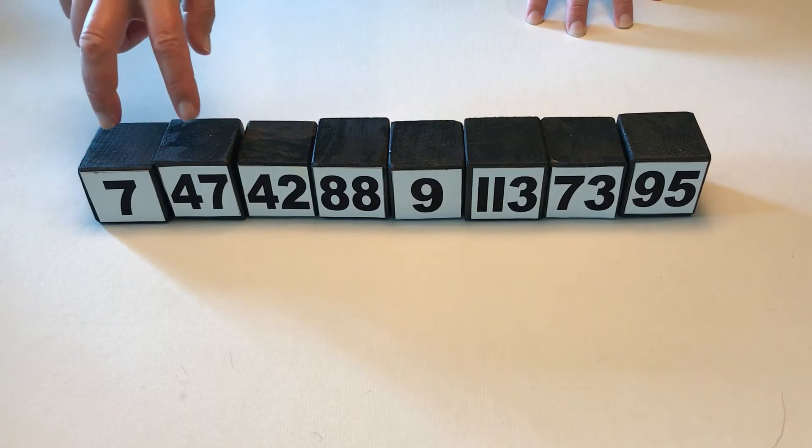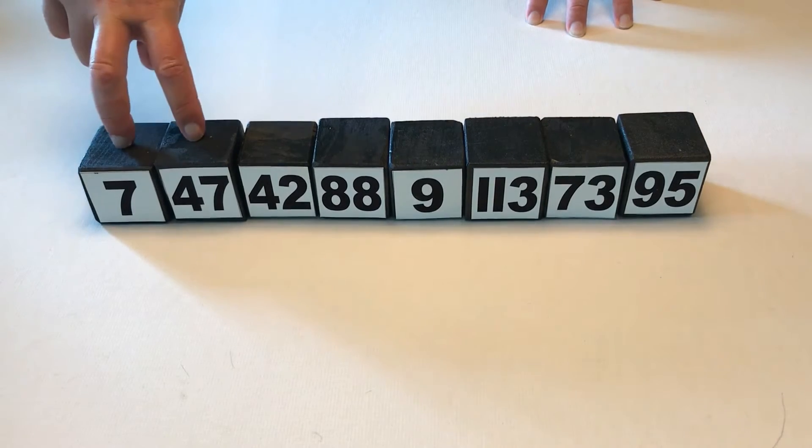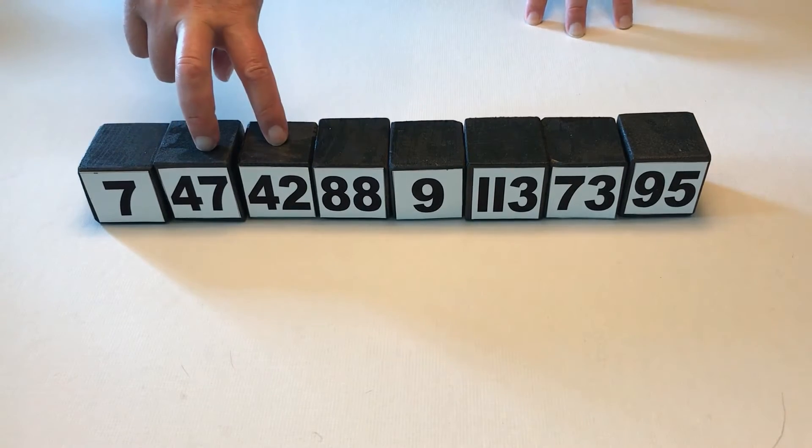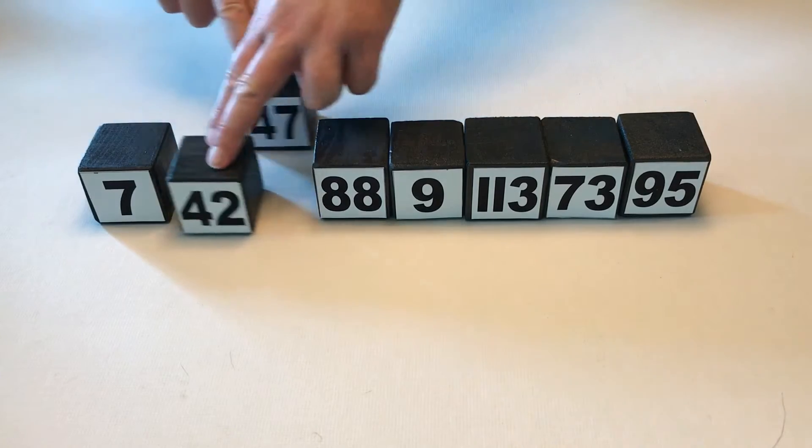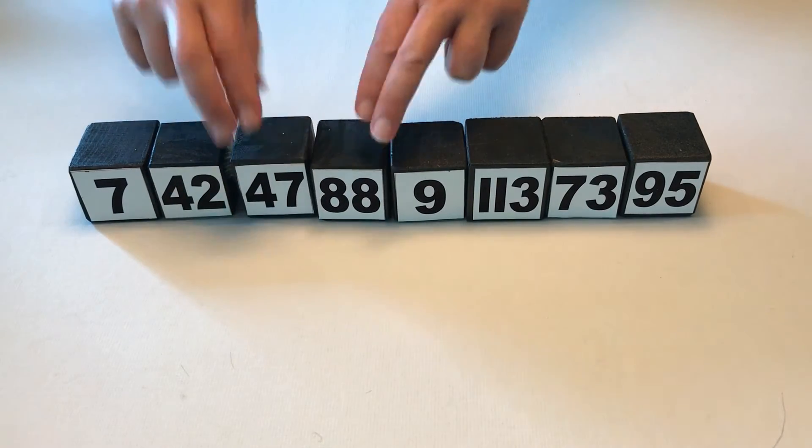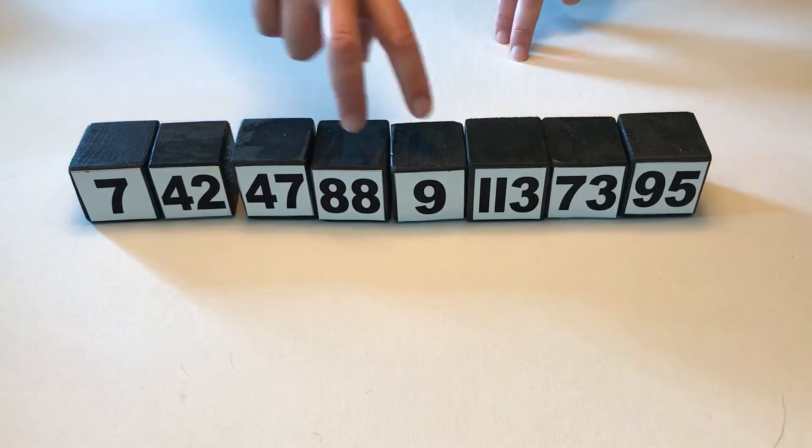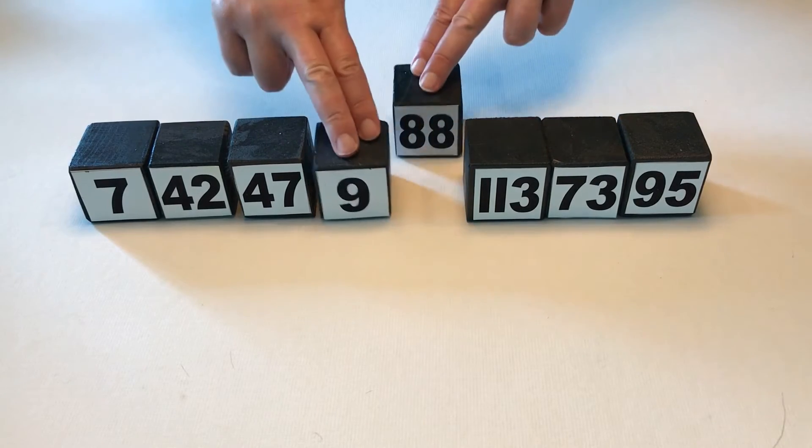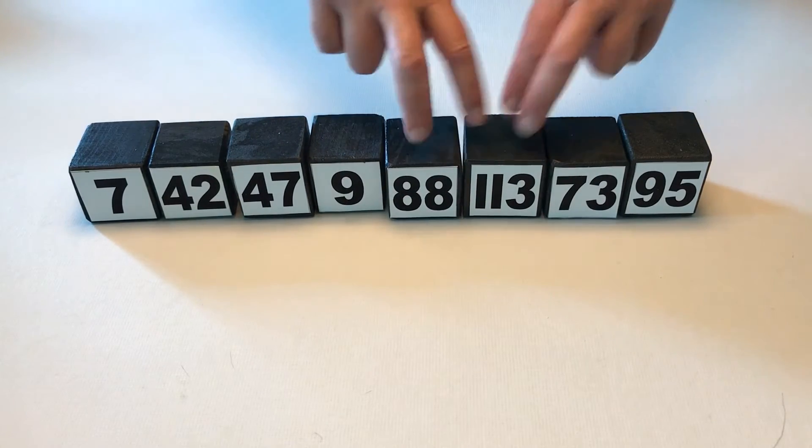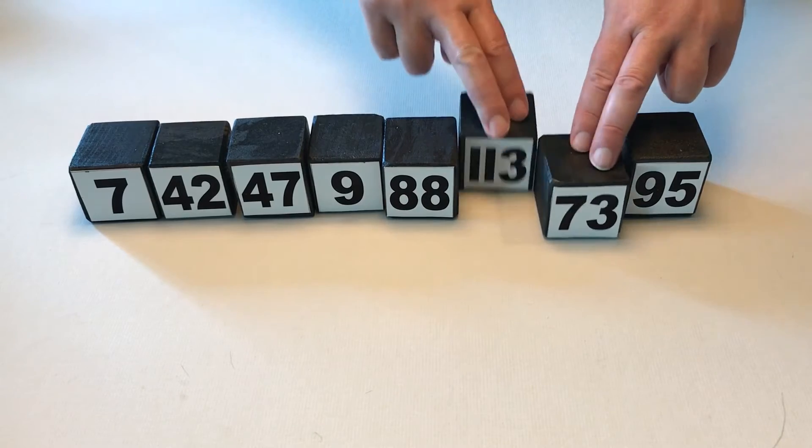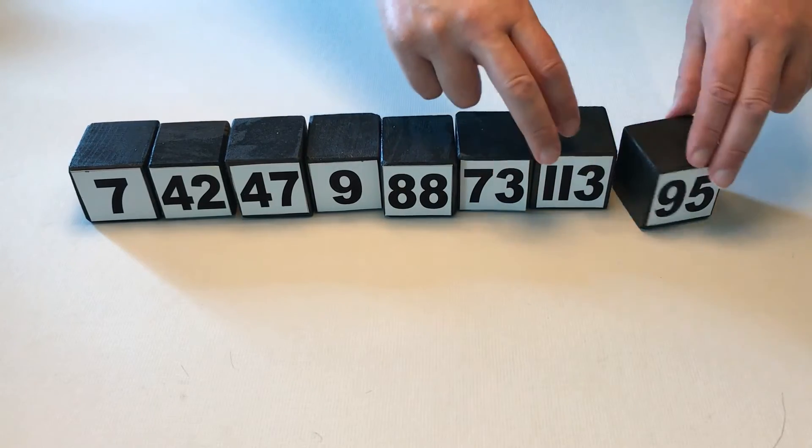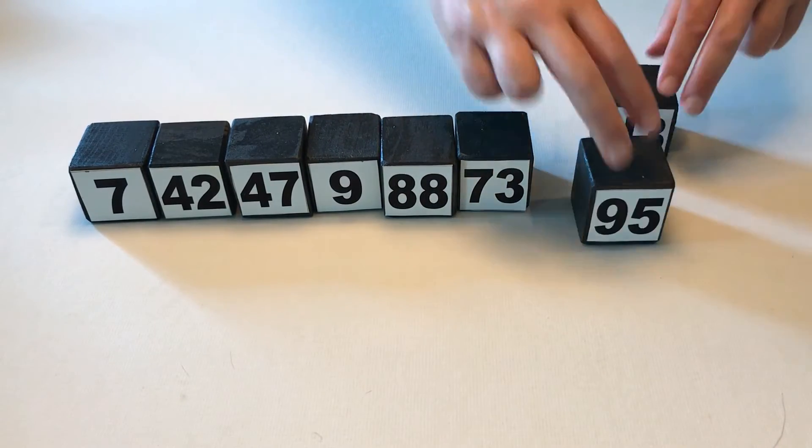Let's first start with these two right here. These are in order. Let's look at the next two. They are out of order, so we swap them. Now let's look at the next two. They're in order. Next two, they're out of order, swap them. Next two, they're in order. Next two, they're out of order, so let's swap them. Next two, they're out of order, so let's swap them.